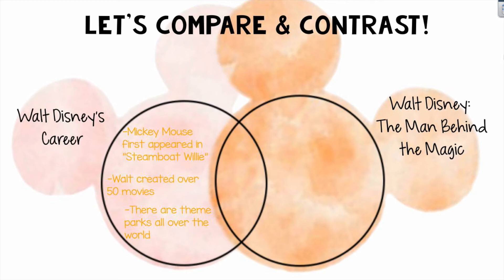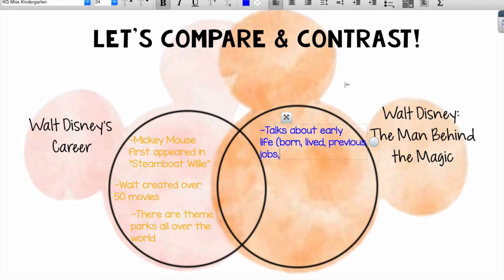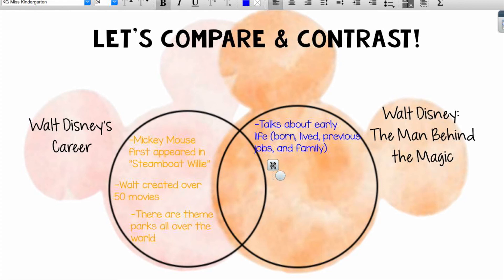Now let's move on to our second text, Walt Disney, The Man Behind the Magic. The first difference is that the second text talked about his early life — when he was born, where he lived, his previous jobs, and his family. The second detail from the second text was that in the 1920s he became interested in creating cartoons, so I'm going to write: in the 1920s, he became interested in cartoons.